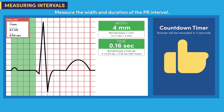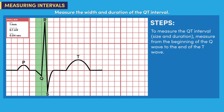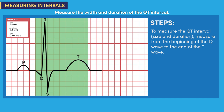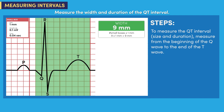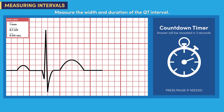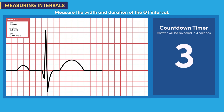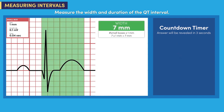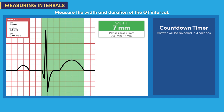Let's measure the QT interval. To measure the QT interval, measure from the beginning of the Q wave to the end of the T wave. The width of the QT interval is nine millimeters and the duration is 0.36 seconds. Now you try it. Measure the width and duration of this QT interval. The width of the QT interval is seven millimeters and the duration is 0.28 seconds or 280 milliseconds.